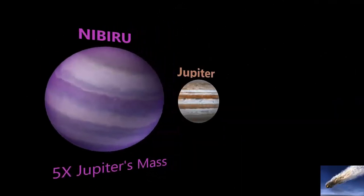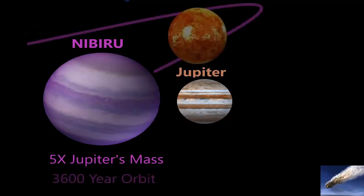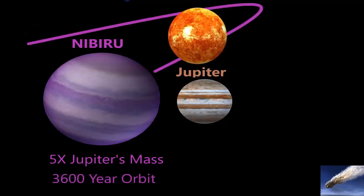Nibiru is said to be five times the size of Jupiter, making it a giant among giants. Its orbit around our Sun is said to be somewhere in the range of every 3600 years.